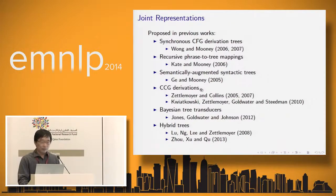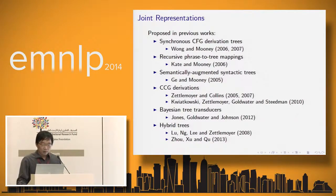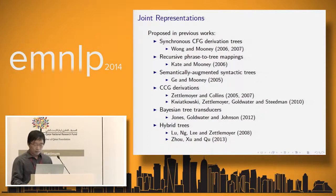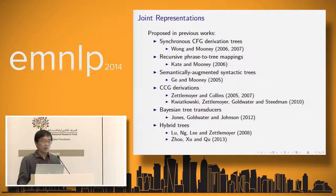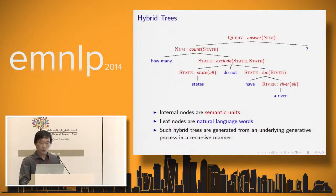In CCG-based semantic parsers, the assumption is that a CCG derivation tree connects the text and semantics. More recently, there's work on tree transducer-based semantic parsing, assuming a tree transducer maps input linear structure to tree-structured semantics. Finally, we have hybrid tree representations, which we proposed in 2008. Because we build our new representation on this work, we'll spend the next few slides giving more details.